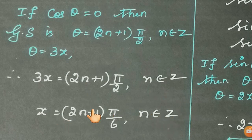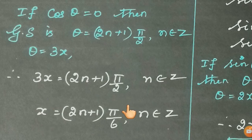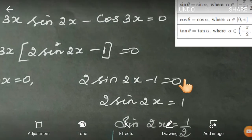Here n belongs to Z — all integers: 0, ±1, ±2, ±3, and so on to infinity. All these values satisfy the equation. So this is the general solution for x in Case 1.